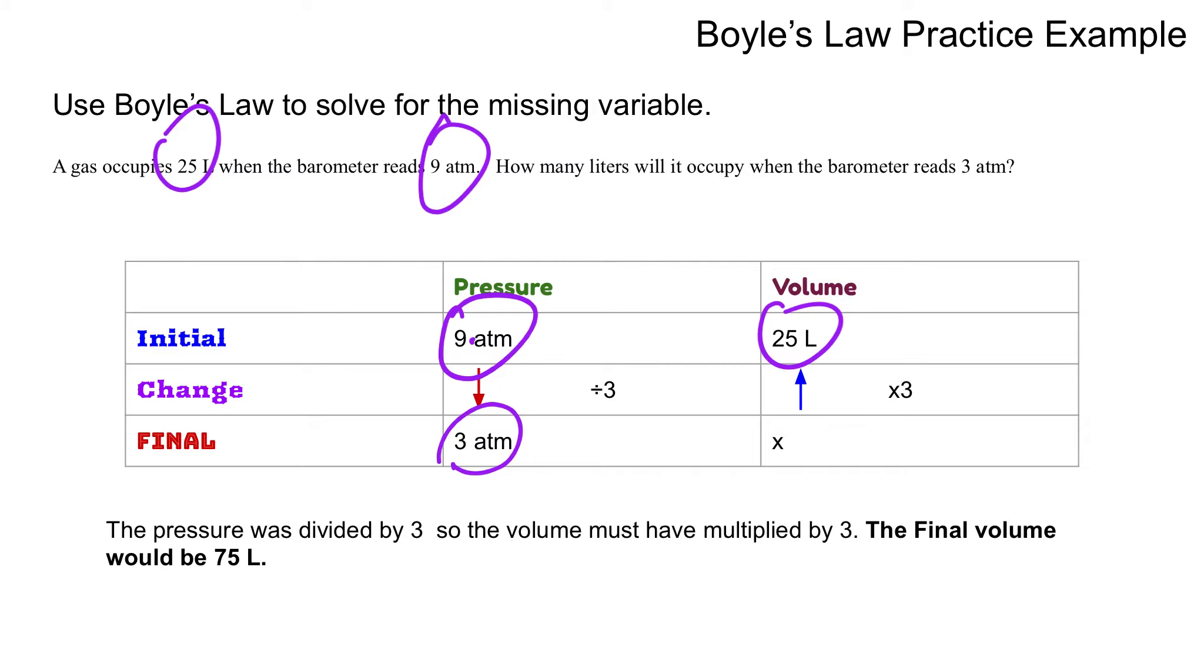And then I went from 9 atm to my final atm being 3. What did I do to go from 9 to 3? It was a change. I divided 9 by 3 to get 3 atm. So if I divided my pressure by 3, I must have also multiplied my volume by the same amount. The pressure was divided by 3, so the volume must have been multiplied by 3. The final volume would be 75 liters.